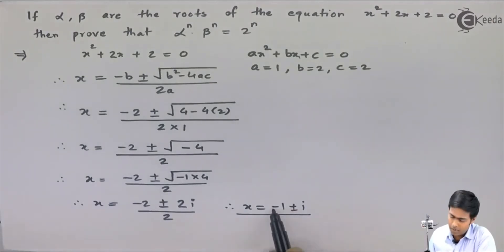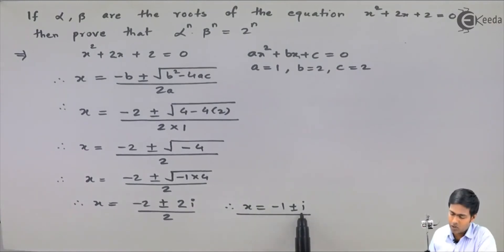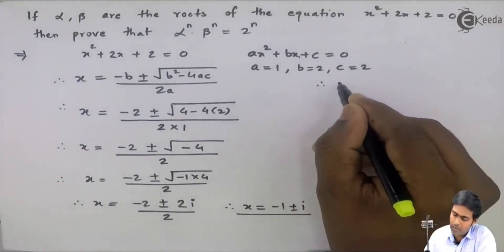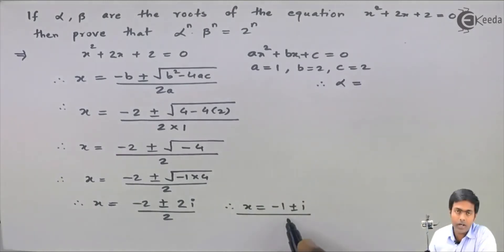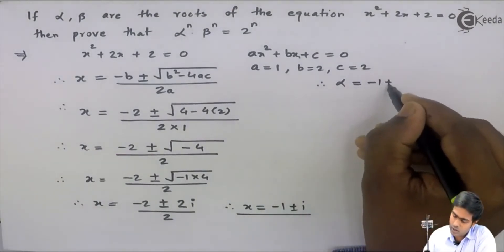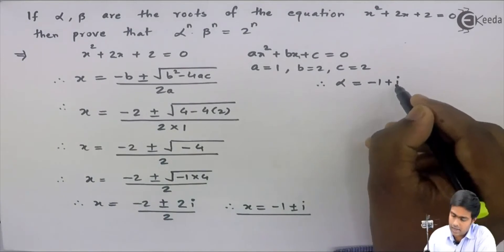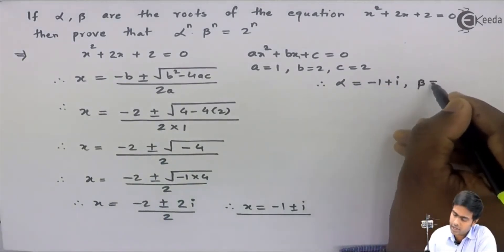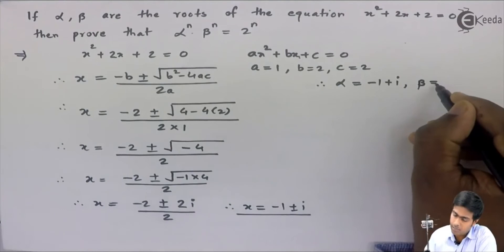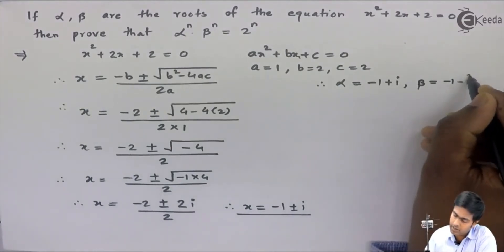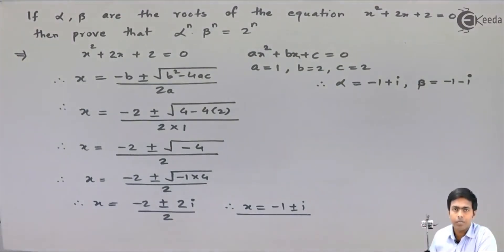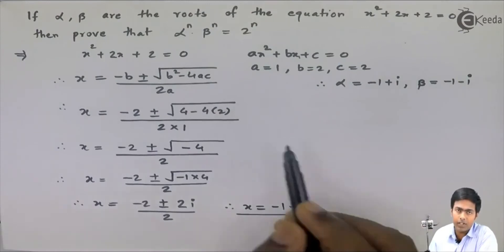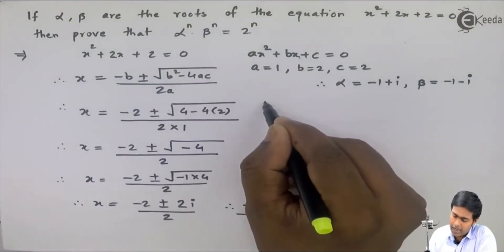We are getting two answers: the first is −1 + i and the second is −1 − i. So we take the first root as alpha: α = −1 + i, and the second root as beta: β = −1 − i. Now let's start with the proof, beginning from the LHS.